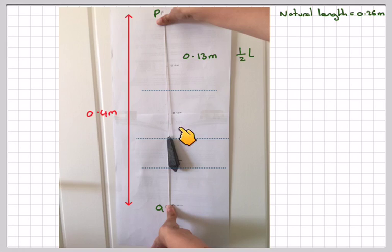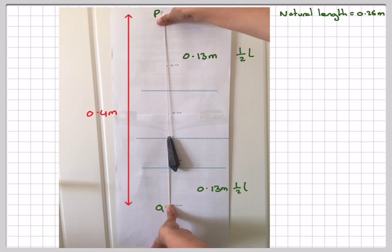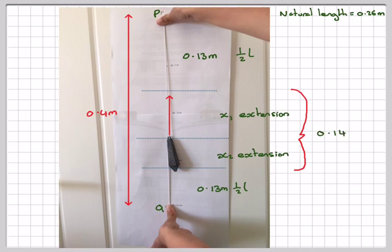There will be a stretch in the upper part. The bottom part has a natural length of 0.13 metres, which is half of the original natural length. These two natural lengths add up to the original natural length. So we have one extension in the upper part and one extension in the lower part, and together the extensions add up to 0.14 metres. The total stretched length adds up to 0.4 metres.